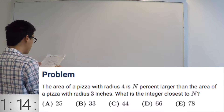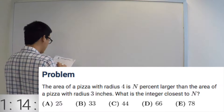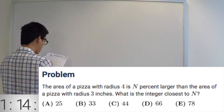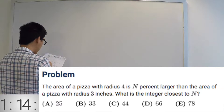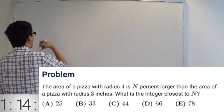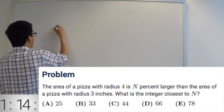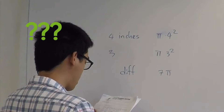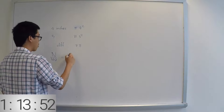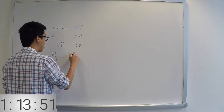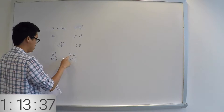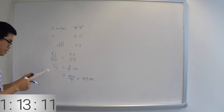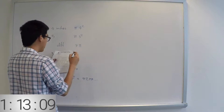All right, so the first problem is: the area of the pizza with radius 4 inches is what percent larger than the area of the pizza with radius 3 inches? So for radius 4 it's 16π, and for radius 3 it's 9π, giving us 7π over 9, which is 7 over 9. So the answer to number one is E.